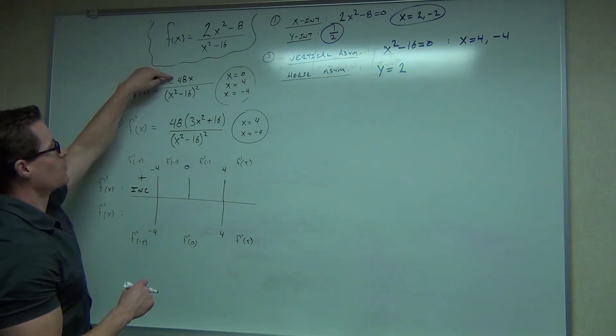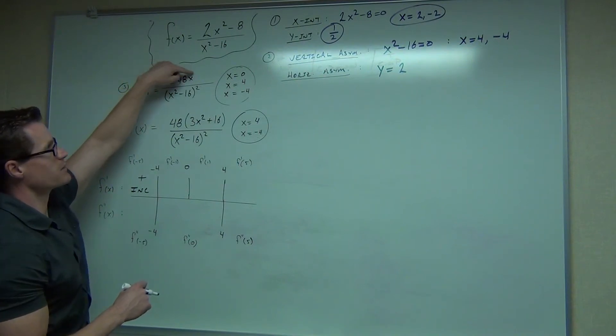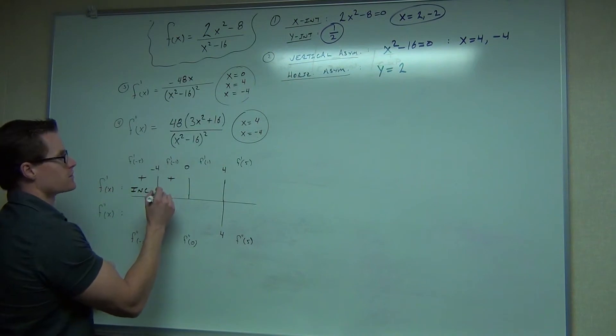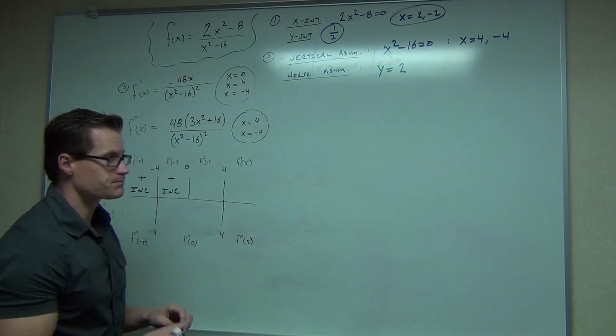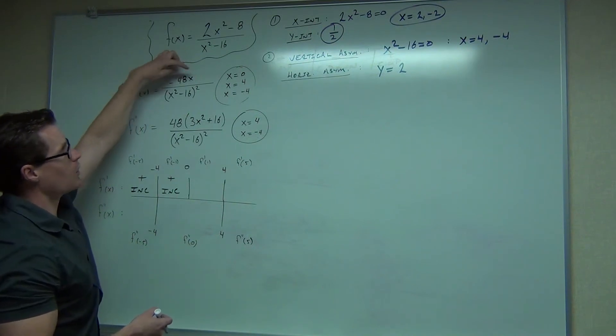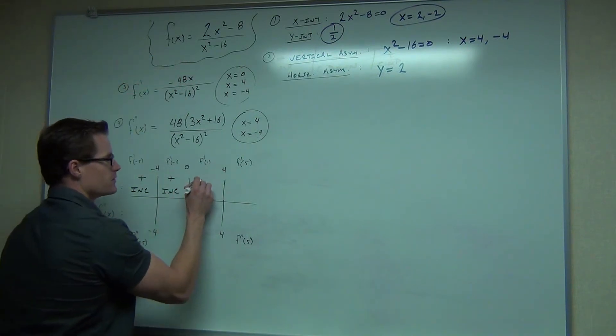You don't exactly care about the whole value of it. You care whether it's positive or negative. Increasing. Negative 1. Well, that says negative times negative is a positive over a positive. Again, that is positive. Increasing. Next up, we have 1. Negative times a positive is a negative over a positive. That's going to be a negative. Decreasing.